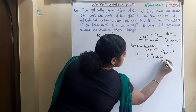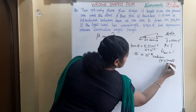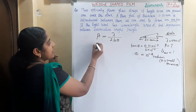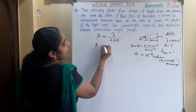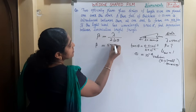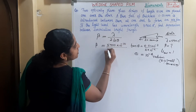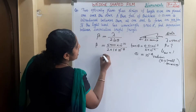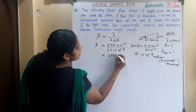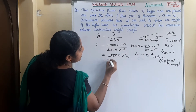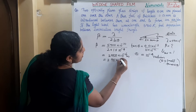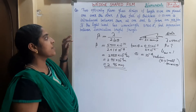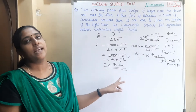Theta is small, therefore tan theta is considered as theta. Now we can substitute this data in the general formula. Beta is equal to lambda 5,900 Angstrom, that is into 10 raise to minus 10, divided by 2 into refractive index of air is 1, into theta is 10 raise to minus 4. That is equal to 2,950 into 10 raise to minus 6 meter, or 2.95 into 10 raise to minus 3 meter, or 2.95 millimeter. So the distance between two consecutive bright fringes is 2.95 millimeter.